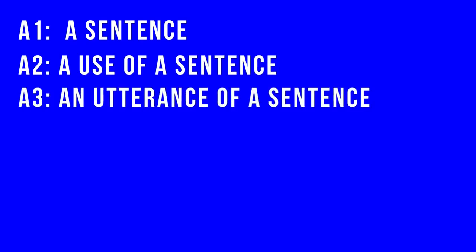P.F. Strawson rejects Russell's reductionism. He divides the issue into six parts: A1, a sentence; A2, a use of a sentence; A3, an utterance of a sentence; B1, an expression or definite description — a denoting phrase; B2, a use of an expression; B3, an utterance of an expression.